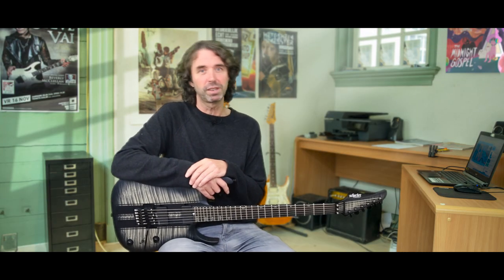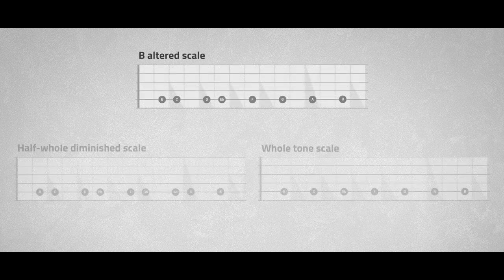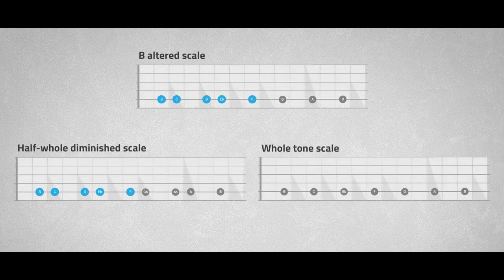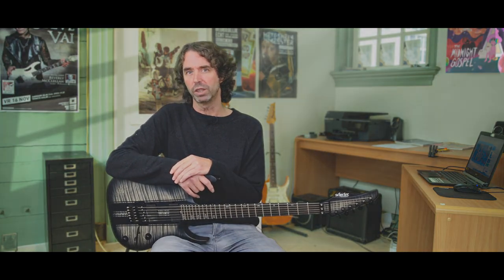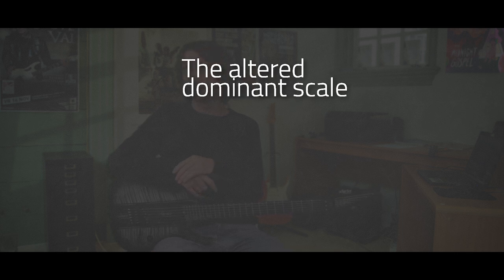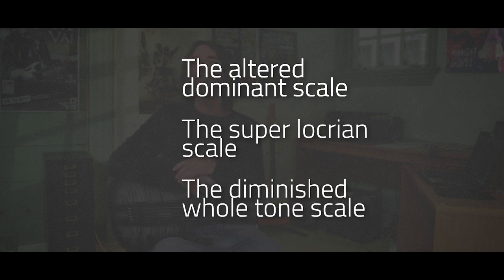There's even a third name for this scale. The altered scale has a bit in common with the diminished scale and also with the whole tone scale. The first five notes of the scale are exactly the same as the half-whole tone diminished scale, or dominant diminished scale, whereas the last part of the scale has similarities with the whole tone scale. For this reason, the altered scale is also referred to as the diminished whole tone scale — a combination of the diminished and the whole tone scale. So now we have three names for this remarkable scale: the altered dominant scale, the Super Locrian mode, and the diminished whole tone scale.